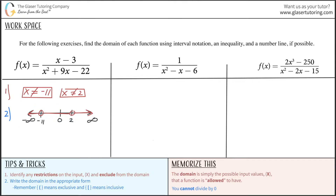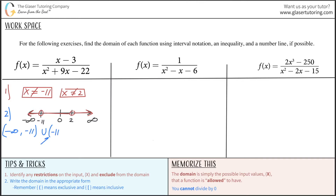We're going to have three important components: this piece, this piece, and this piece. In interval notation: it goes from negative infinity — parenthesis, since you cannot include it — all the way to negative 11, also not included, so parenthesis. Then union from negative 11, exclusive, all the way to 2, exclusive. Or from 2, exclusive, all the way to infinity, not included.